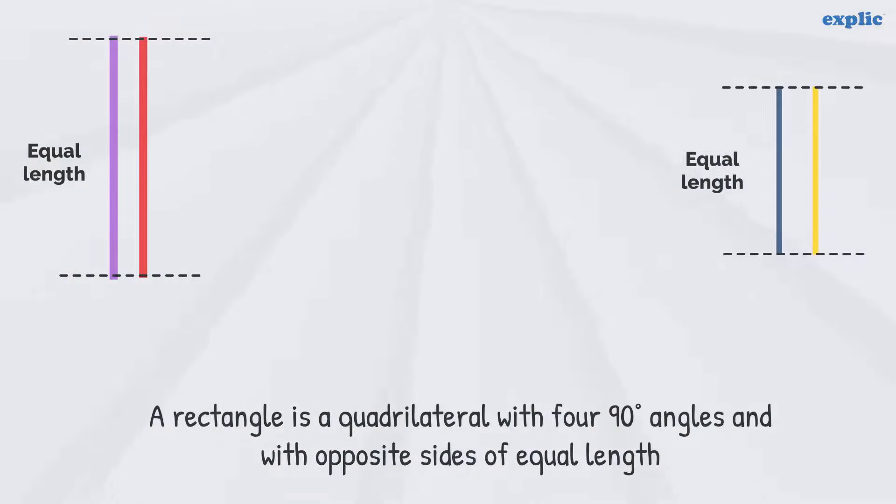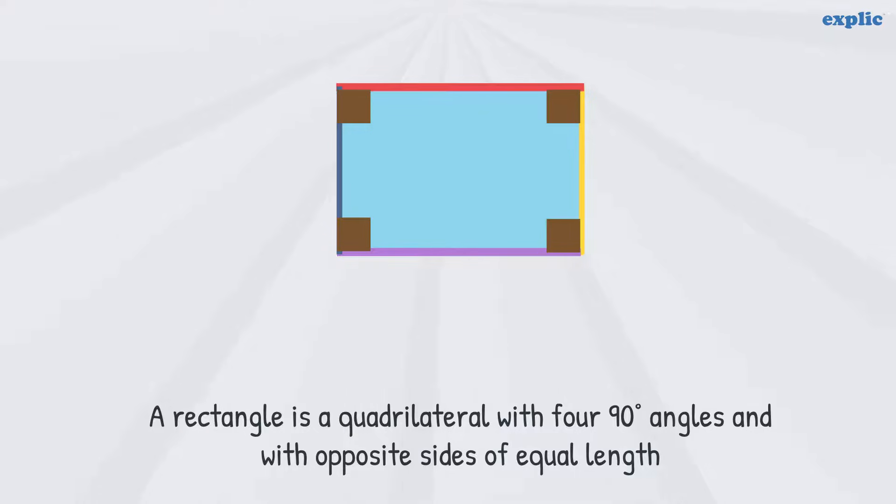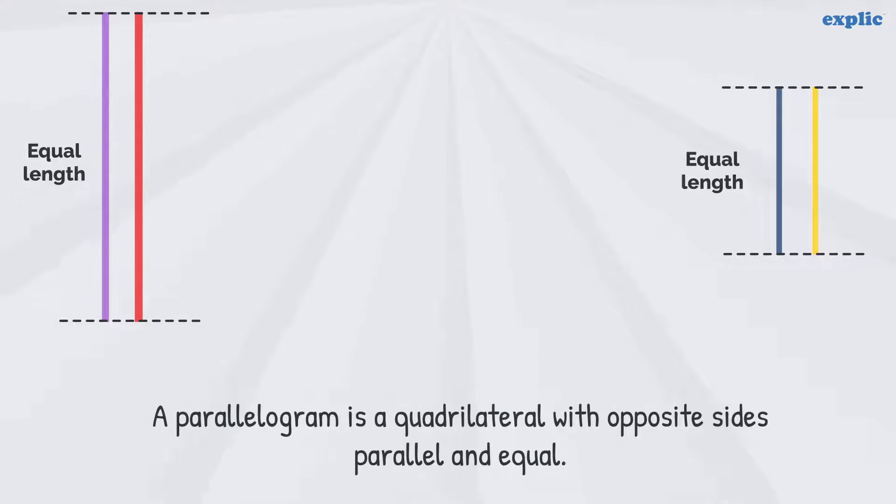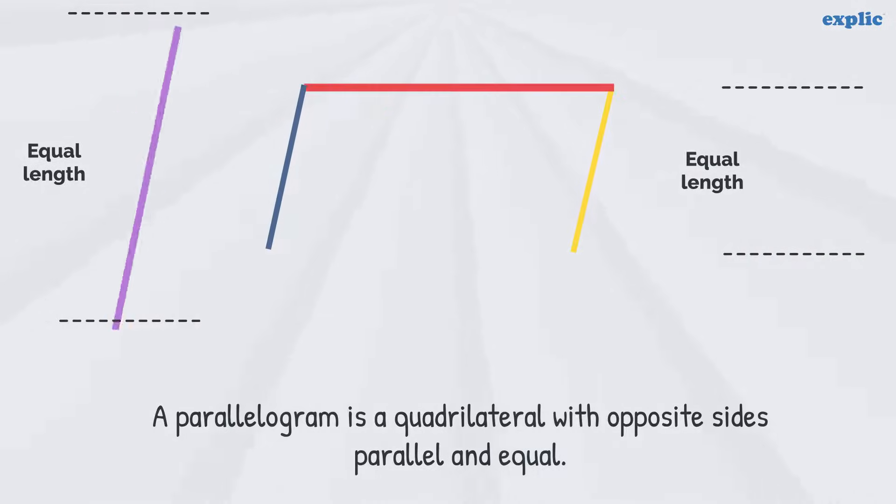A rectangle is a quadrilateral with four 90-degree angles and with opposite sides of equal length. A parallelogram is a quadrilateral with opposite sides parallel and equal.